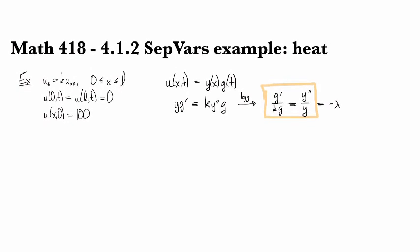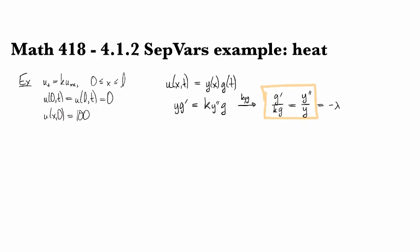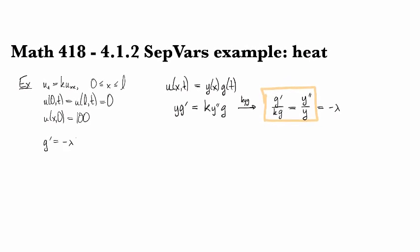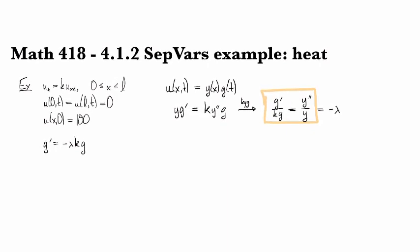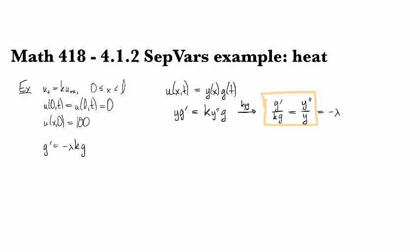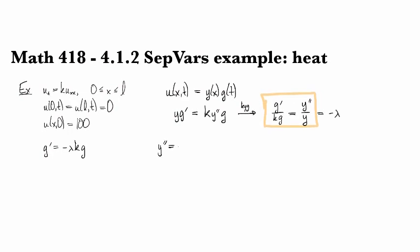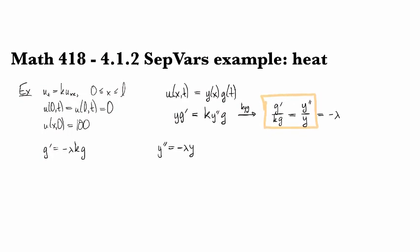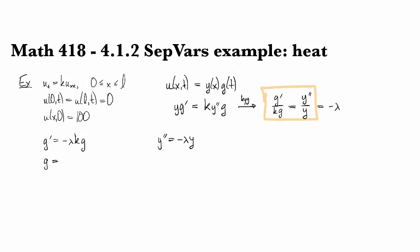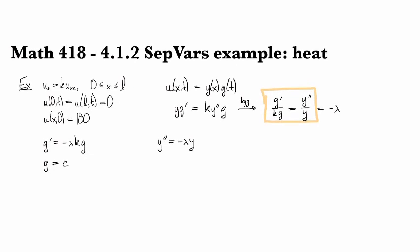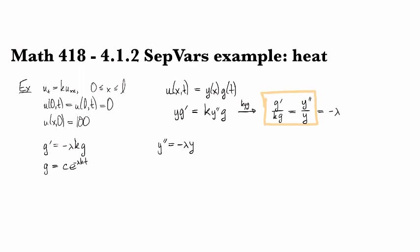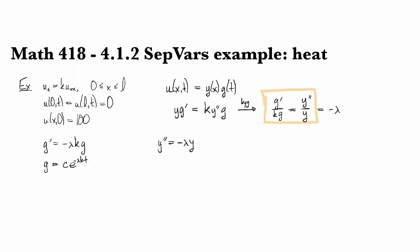So from this equation, we get two different equations, two different ODEs. So g prime over k g equals minus lambda becomes g prime equals minus lambda k g. And y double prime over y equals minus lambda becomes y double prime equals minus lambda y. Now, for the first one, we can solve by basic methods and see that this looks like a constant times e to the minus lambda k t.